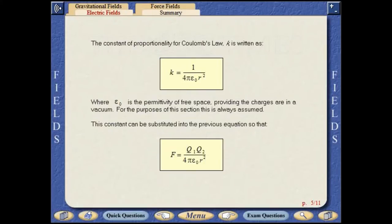The constant of proportionality for Coulomb's law, K, is written as shown here, where epsilon 0 is the permittivity of free space, providing the charges are in a vacuum.